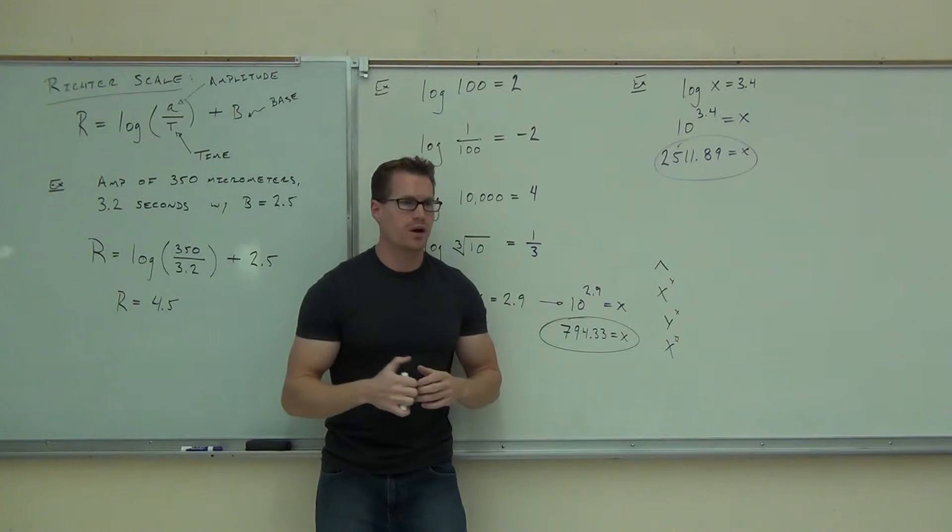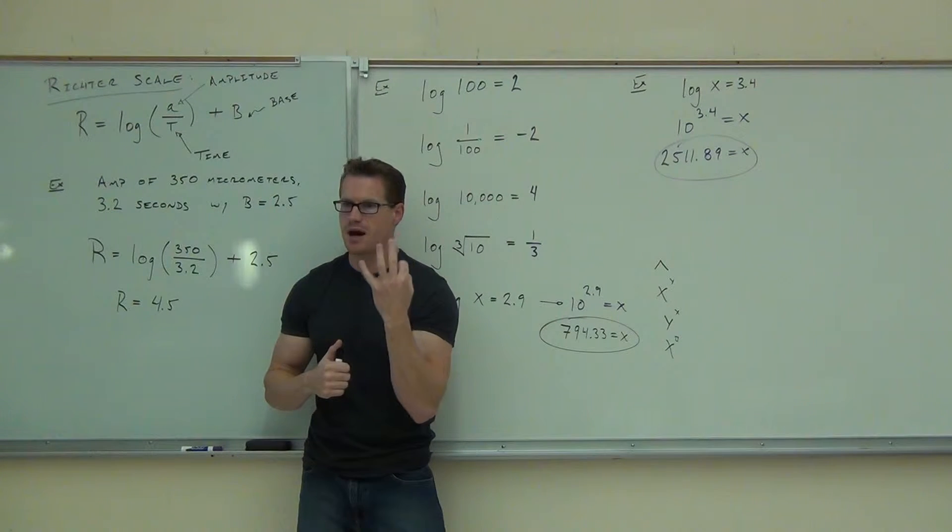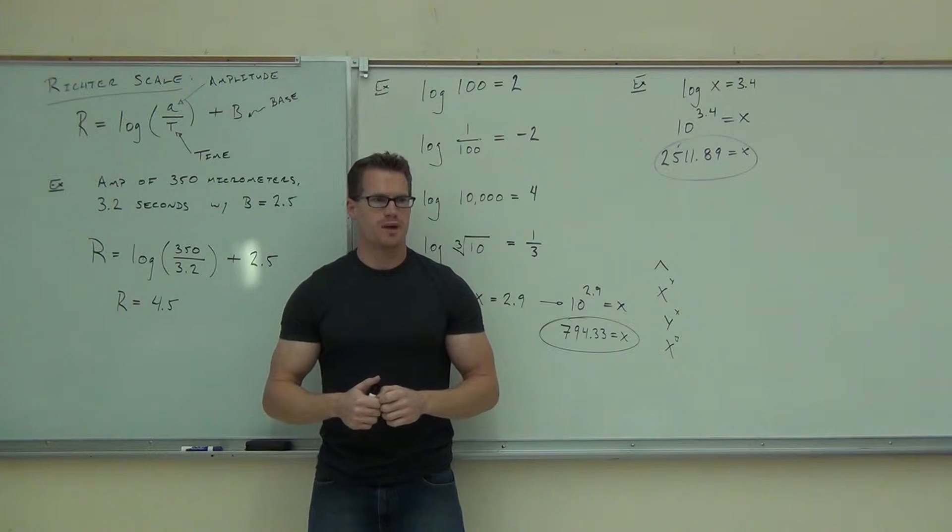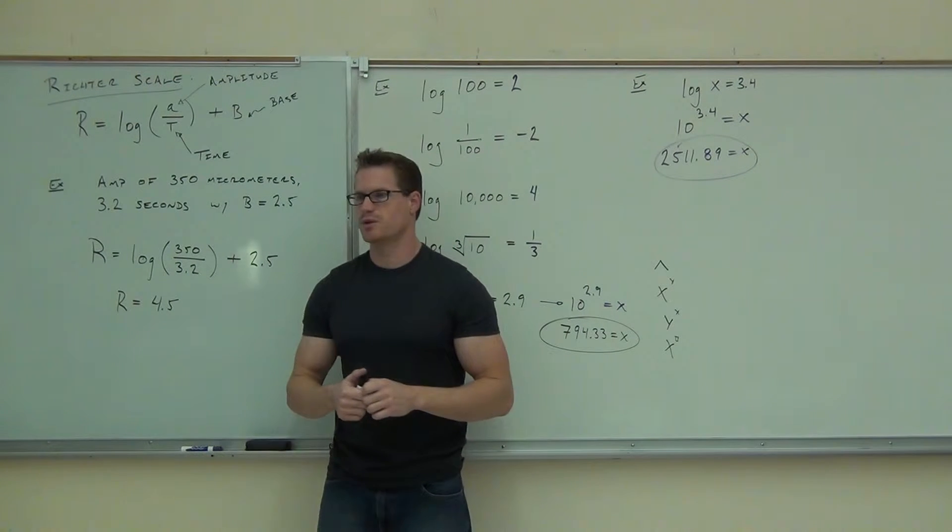So why is an 8.0 that much bigger than a 5.0? Well, that's 3 factors of 10, or 1,000 times worse. Does that make sense? So if you're going like this on a 5.0, multiply that by 1,000, and that's going to be an 8.0. That's why it's so much worse.